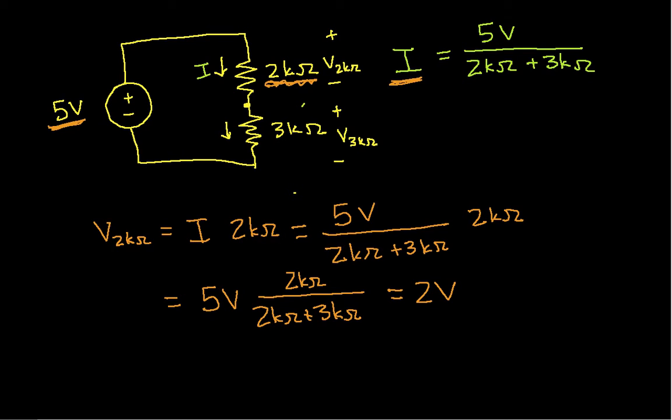So we'll also do this 3k ohm resistor, V_3k ohms. This is I times 3k ohms. And without going through all the steps so explicitly, this turns out to be 5 volts, 3k ohms over 2k ohms plus 3k ohms, which in this case is equal to 3 volts.